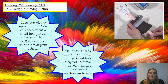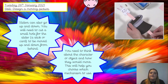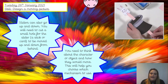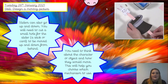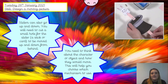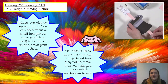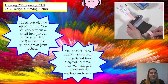It's really important that you think about how your character or object moves in real life. This will help you choose which mechanism to use. We can see my bunny is jumping up and down, so it makes sense to use the slider that goes up and down rather than from side to side.